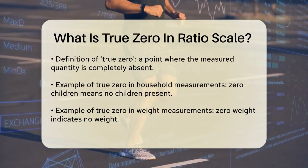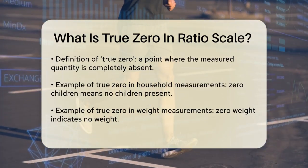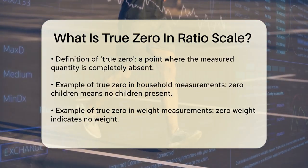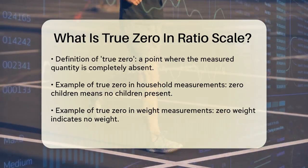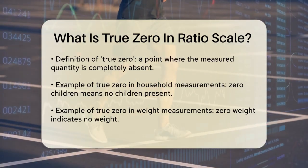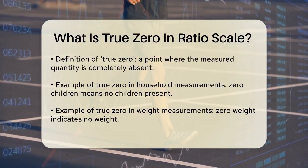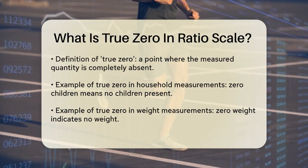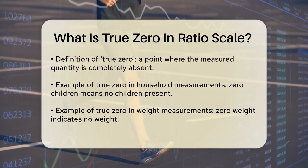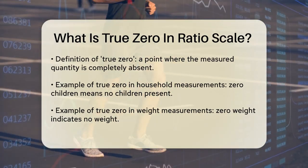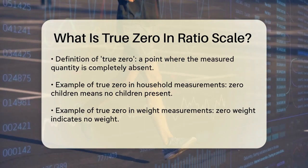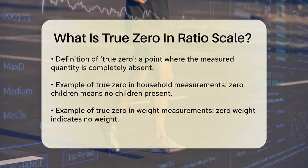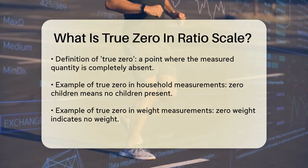Similarly, if you're measuring weight, a true zero would mean there is no weight. This concept is crucial because it allows for meaningful comparisons and mathematical operations. On a ratio scale, you can add, subtract, multiply, and divide values because the zero point is not just an arbitrary marker — it represents the complete absence of the variable you're measuring.